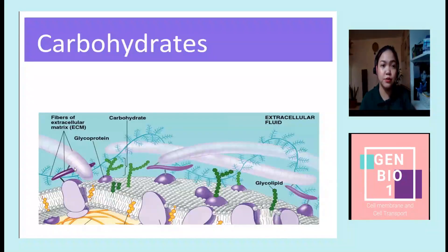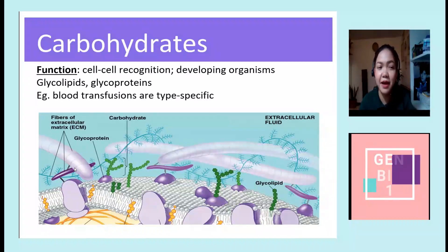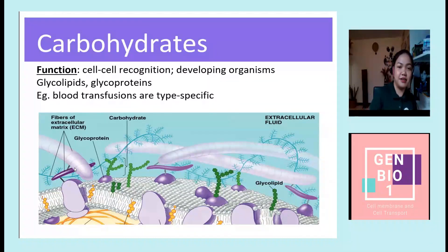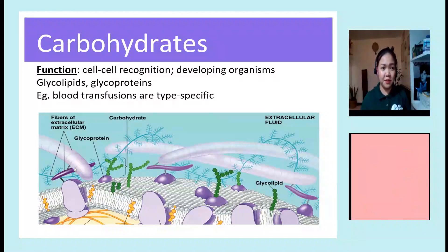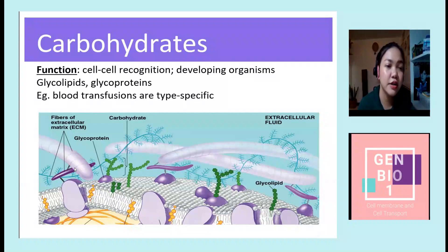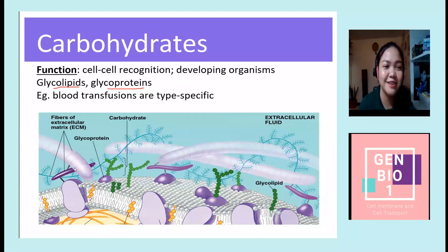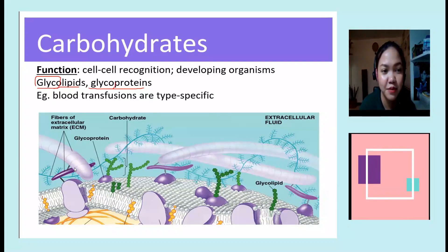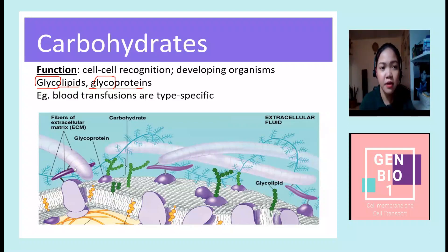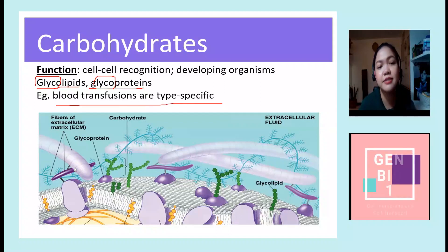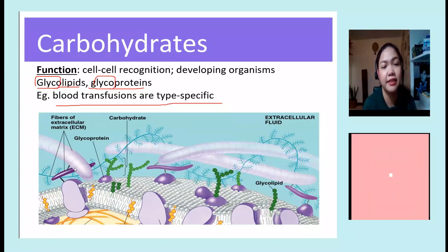Carbohydrates function for cell-to-cell recognition and are vital for developing organisms. Examples are glycolipids and glycoproteins. Glycolipid means sugar plus lipid, and glycoprotein means sugar plus protein. They are particularly important for type-specific blood transfusions.